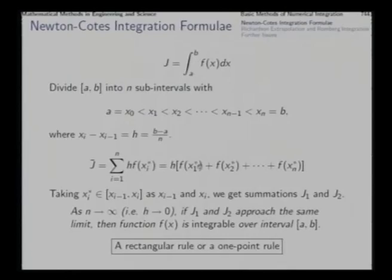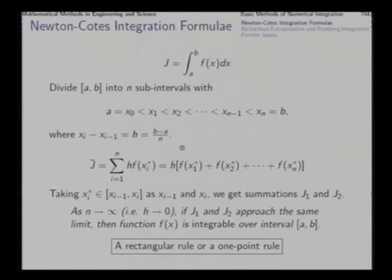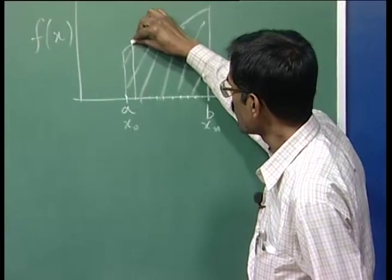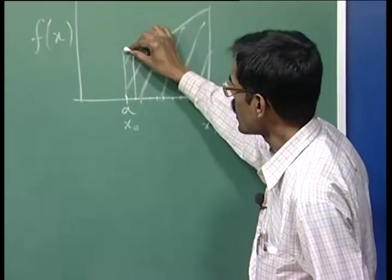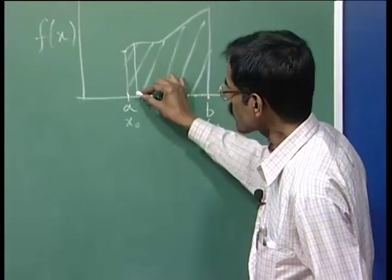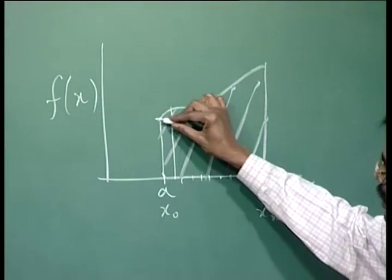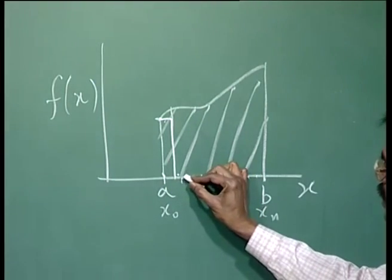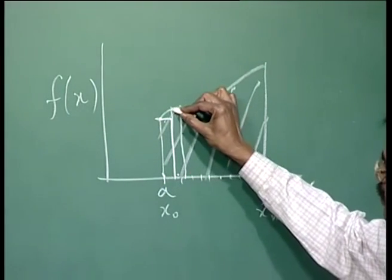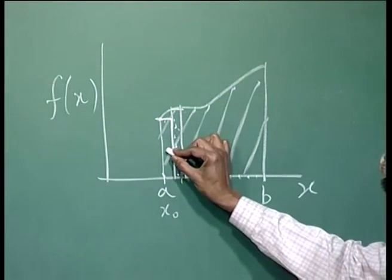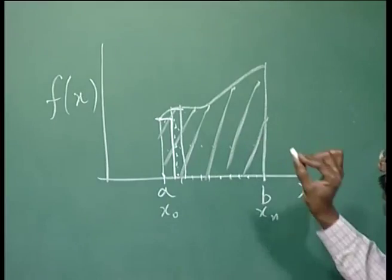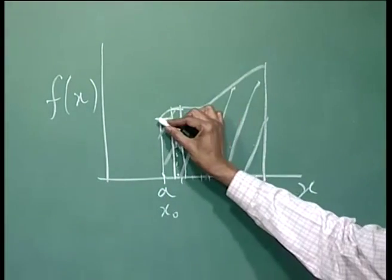An estimate of the integral can be found by taking one point from every interval and summing up the function values over all the intervals — one point from the first interval, one from the second, one from the third and so on. If you sum up these and multiply with h, you get one estimate of the integral.